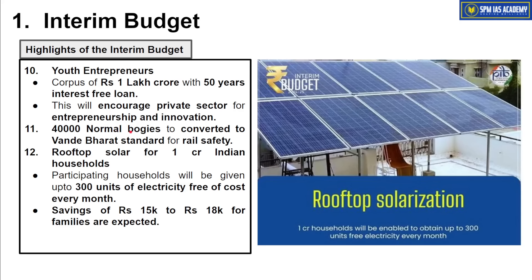40,000 normal train bogies will be converted into the Vande Bharat standard in order to increase rail safety. Regarding the rooftop solar scheme: 1 crore Indian households will have solar panels installed on their rooftops. Households that participate will get 300 units of electricity free of cost every month. Plus, surplus solar energy produced can be sold in the market to generate income — saving a family 15,000 to 18,000 rupees per year.